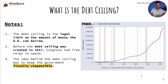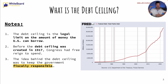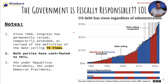So before the debt ceiling was created in 1917, Congress had free reign to spend. The idea of this debt ceiling is basically the way to keep government fiscally responsible, which is pretty funny. It's basically the legal amount that the United States government can borrow to finance its operations and fulfill its obligations. This was established by Congress and essentially caps the total amount of money the government can borrow from the public and from itself. So the government is fiscally responsible, right?